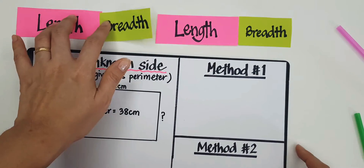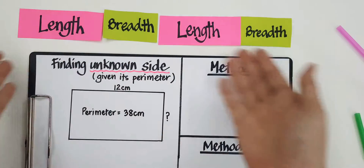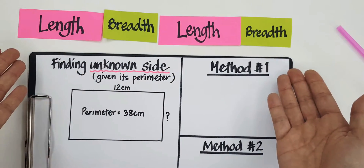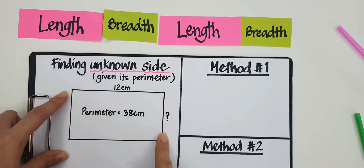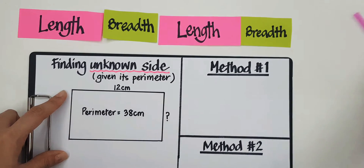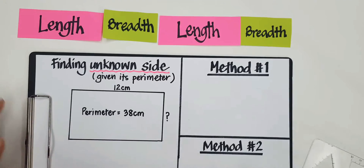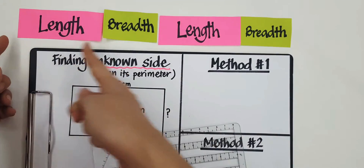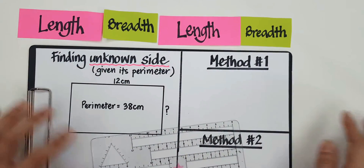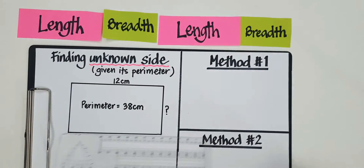So this is a pictorial view of what the parameter looks like. To find parameter, we add the length, the breadth, the length, and the breadth. For those of you who are more pictorial, it would help to draw a model.